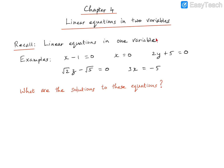What do we mean by a variable? A variable is anything that can change, that can take on different values, and we represent variables using certain letters. For example, in this equation the variable is represented by the letter X. In this linear equation the variable is also X. Here the variable is Y, here it is Z, and here again it is X. So generally the convention is to use the letters X, Y, Z to represent variables.